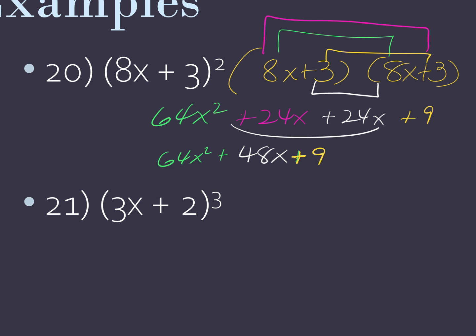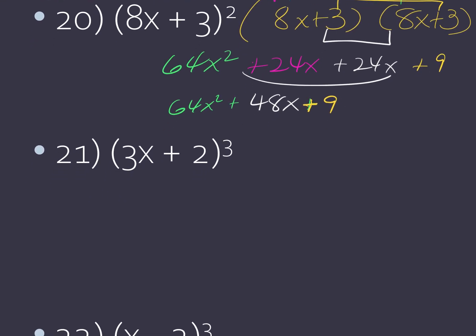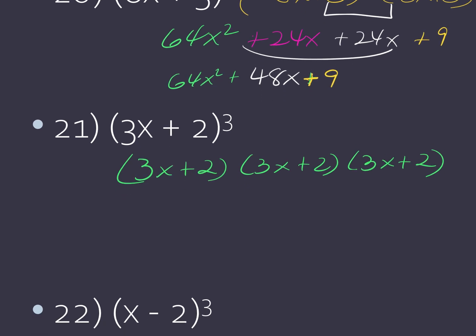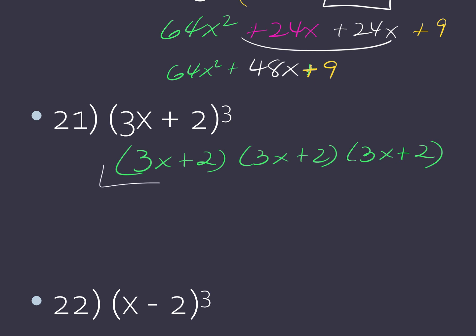Now we have a binomial that's cubed. We can either choose to memorize the pattern, which gets kind of messy, or let's just write down this binomial three times, and then we're just going to multiply them. I'm going to take them two at a time. And then after I get that product, multiply it by the third binomial. So let's go ahead and take these two first — just deal with those first, either FOIL it or distribute it. And then after I get that answer, multiply it one more time with that third binomial.